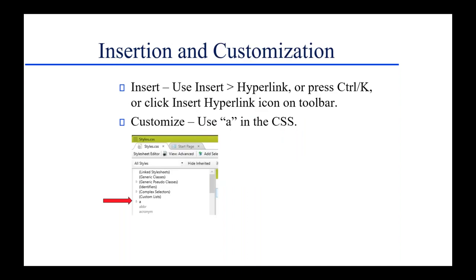How do you insert these things? It's pretty easy. You type or select the text or graphic to which you want to apply the hyperlink, and you select Insert Hyperlink on the menu, or press Control-K, or click the Insert Hyperlink icon on the toolbar. Flare is famous for giving you at least two ways to do anything — here it's giving you three.